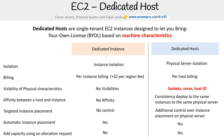The main point here is that on a dedicated host, you have visibility of sockets, cores, and host ID. This is really important when you're bringing your own license — BYOL — such as Microsoft SQL Server, where you have to specify the number of cores and things like that.